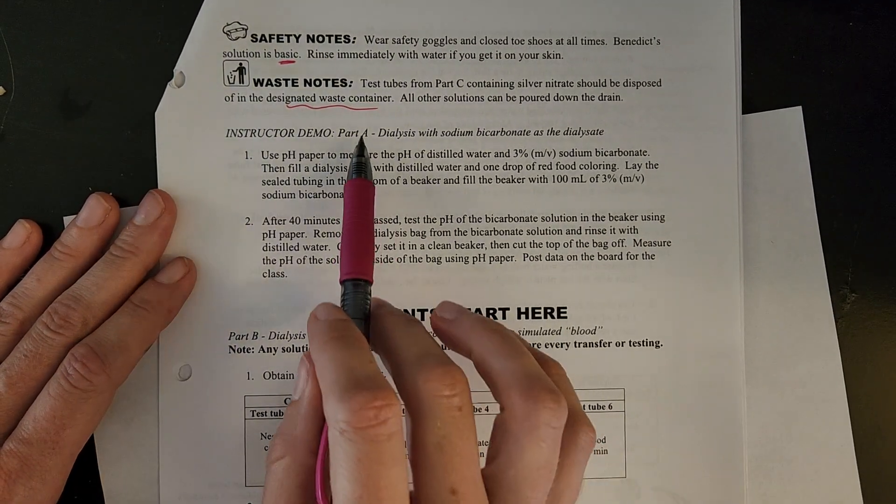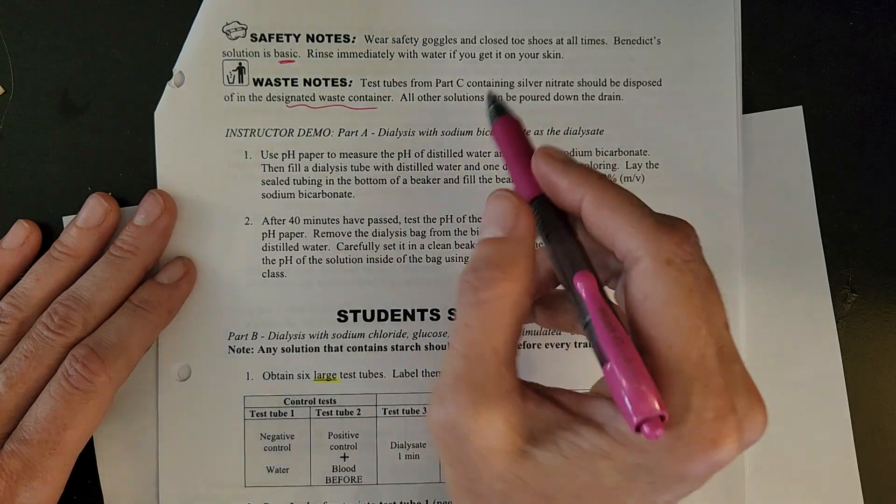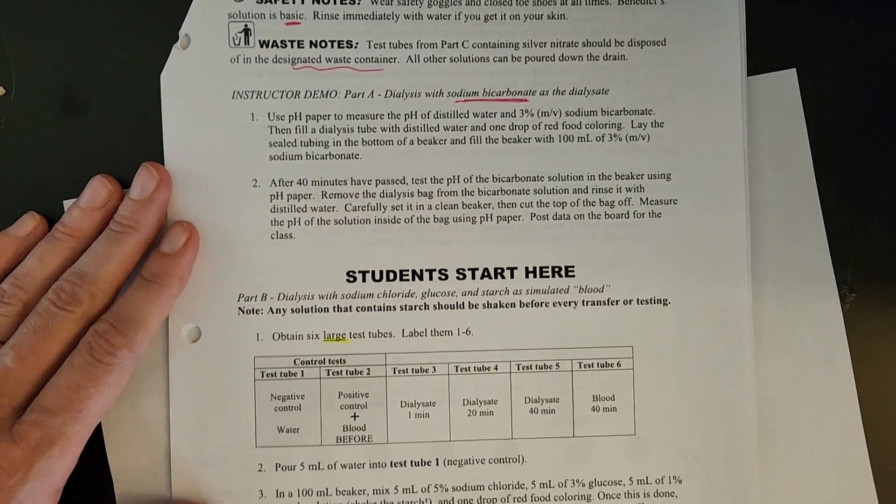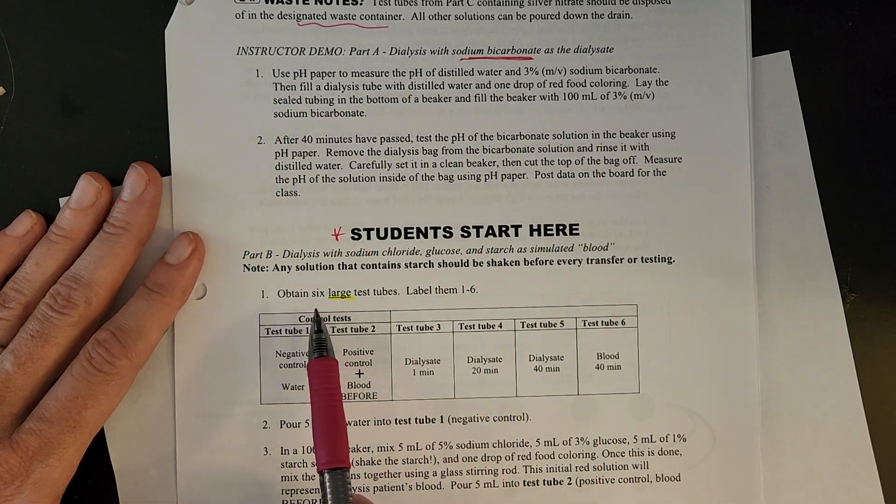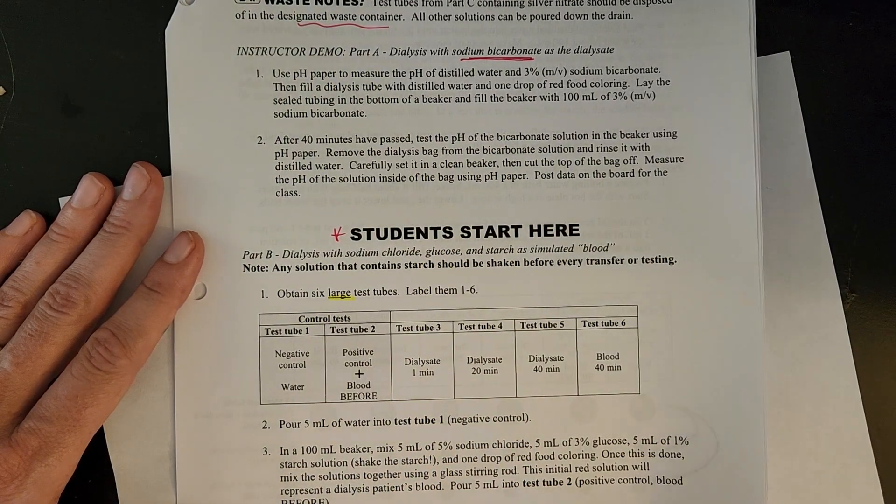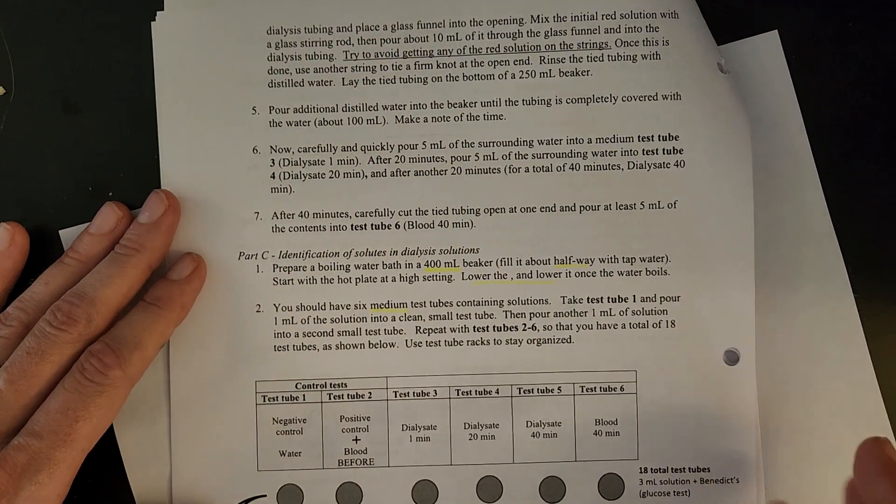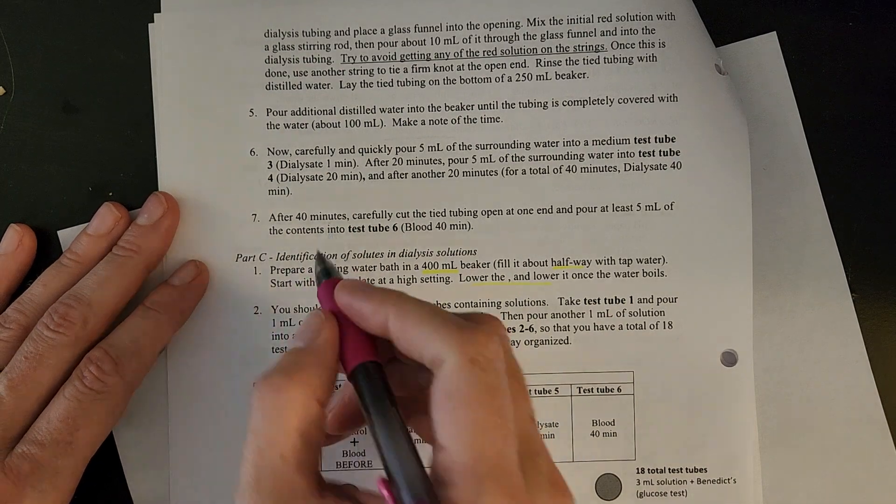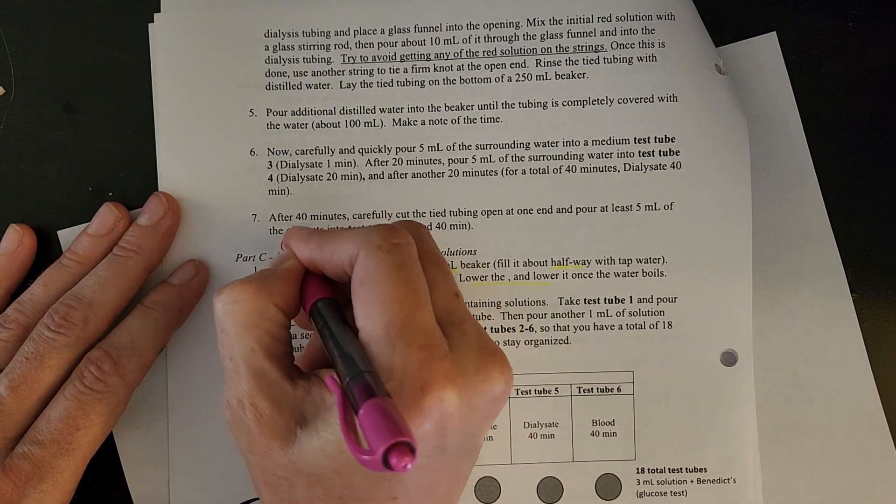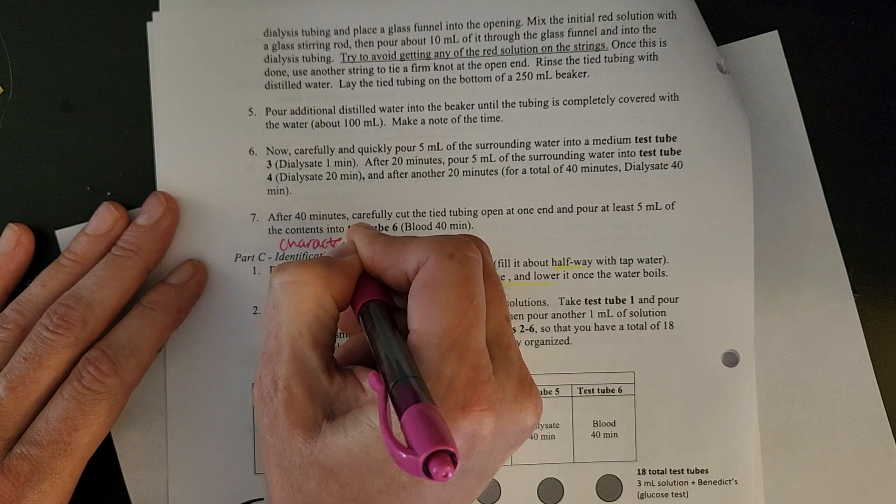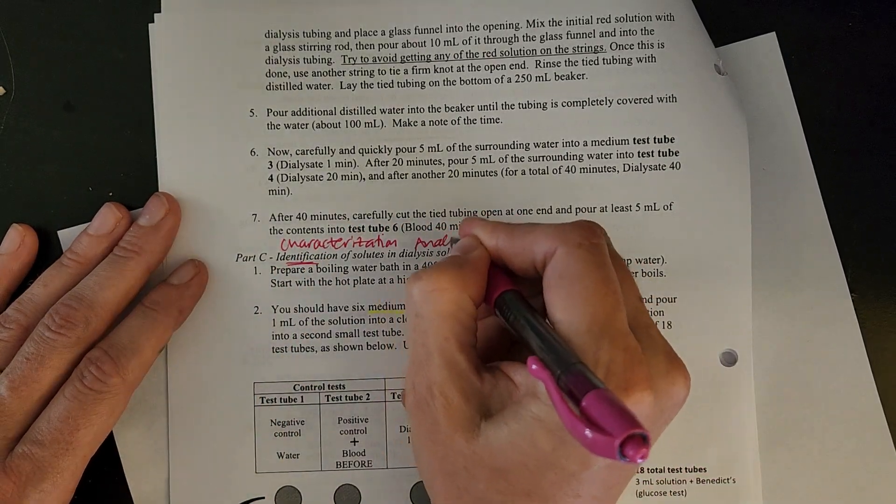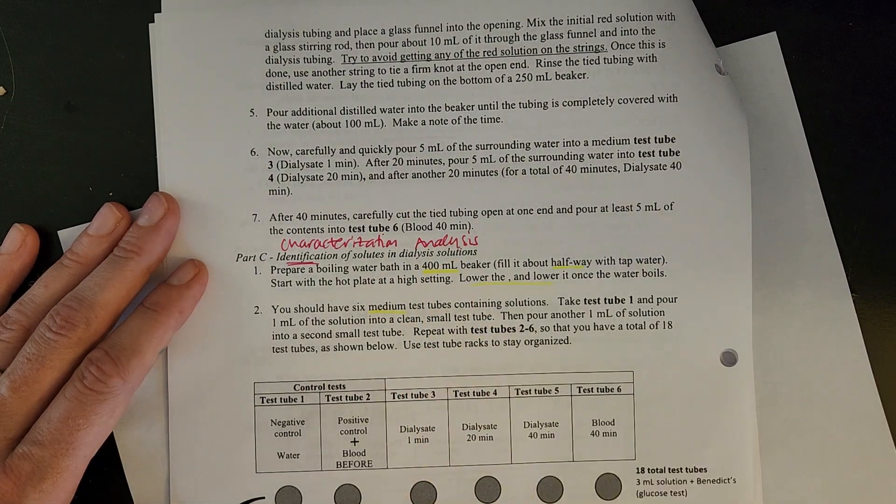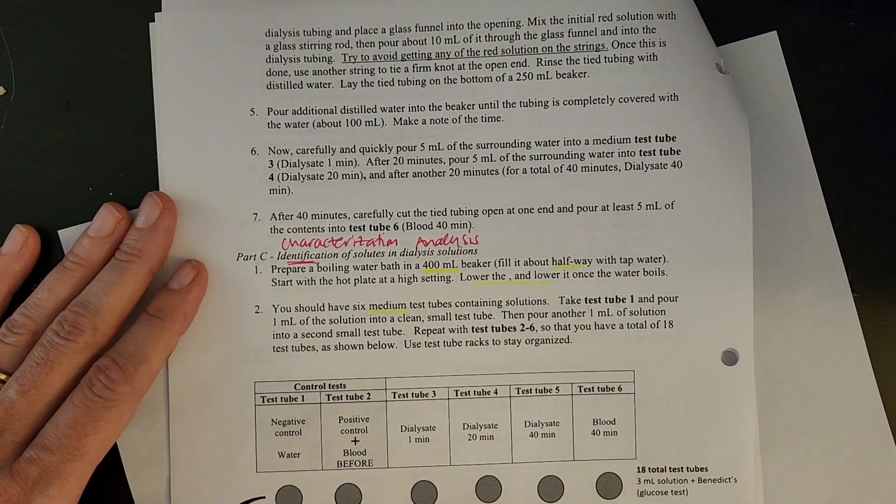And then as far as parts go in your experiment, the first part is going to be an instructor demo. I'll draw that out in a moment with sodium bicarbonate. You will start here in part B. Okay. With six large test tubes. You'll set it up as it describes here. And so that will be your dialysis. And then part C will be identification or another word we've used for that is characterization. So analyzing or analysis. Analyzing what happened during this whole dialysis portion here.